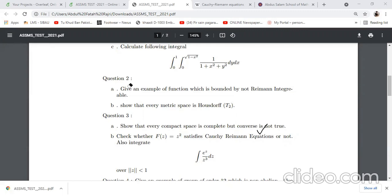Part b of question two says: show that every metric space is Hausdorff T2. Question 3 says: show that every compact space is complete but converse is not true.